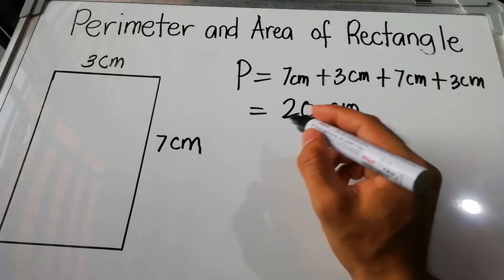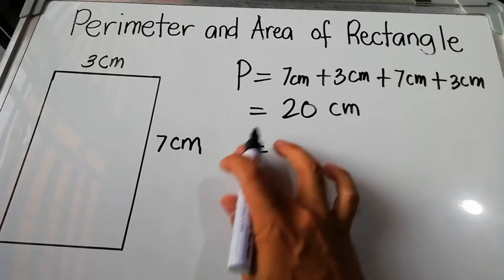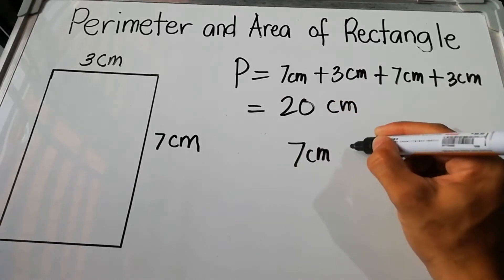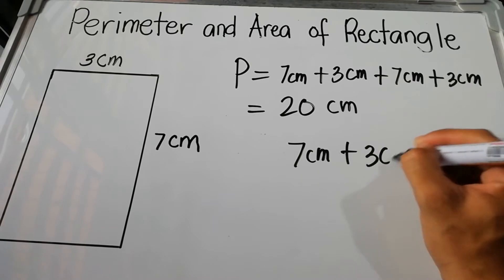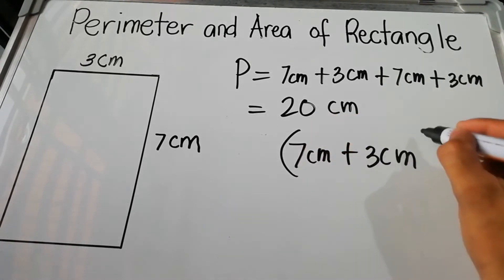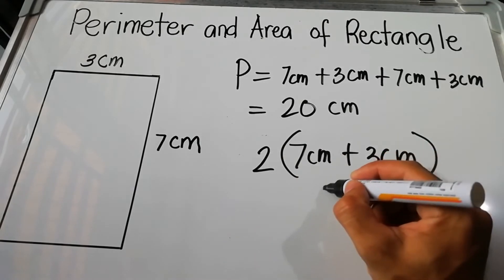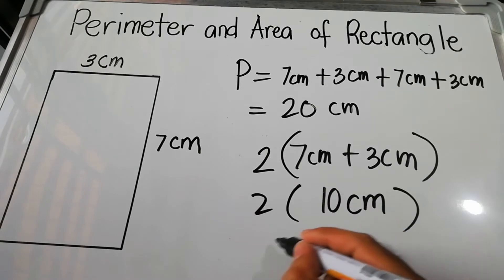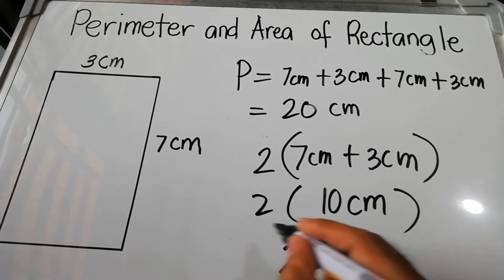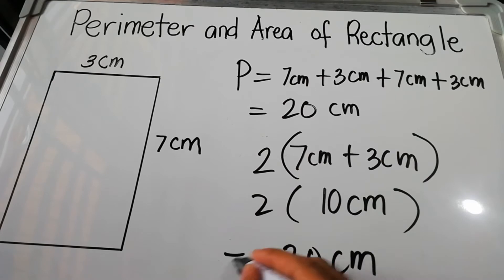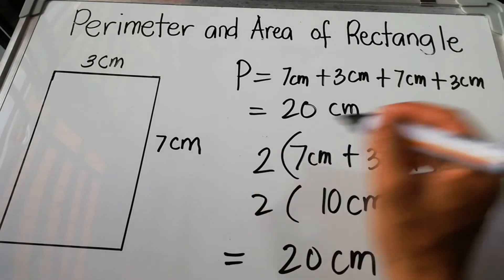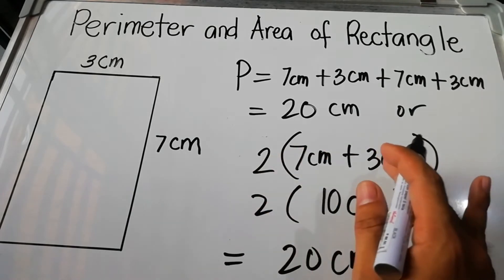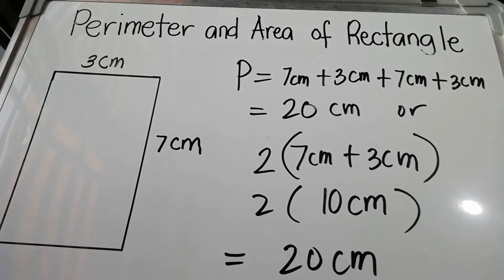Or the easiest way: just add 7 centimeters plus 3 centimeters, then multiply by 2. Seven plus 3 equals 10 centimeters, times 2 equals 20 centimeters — the same result as the first formula. So we can use either formula: 7 + 3 = 10, times 2 equals 20 centimeters.